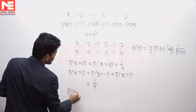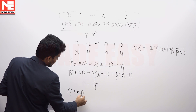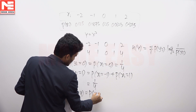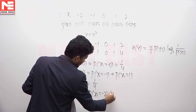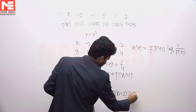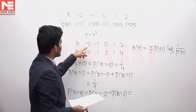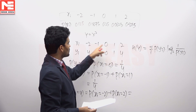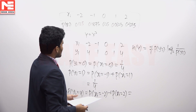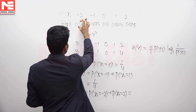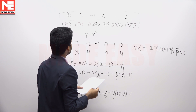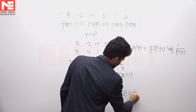What is the probability that y equals 4? It is when x equals minus 2 or x equals 2. In both these cases, y will equal 4. The corresponding probability is 0.125 plus 0.375, which equals 0.5, so 1 by 2.